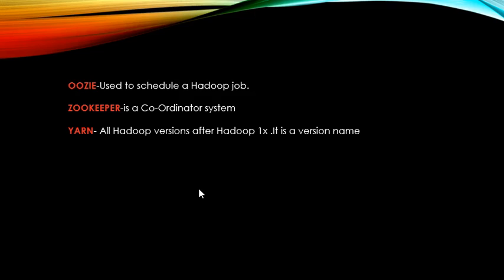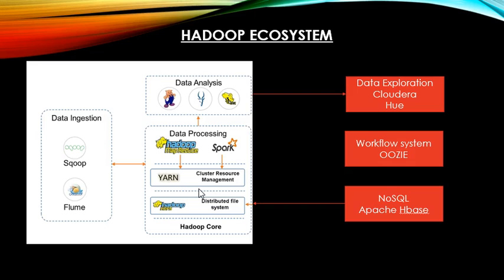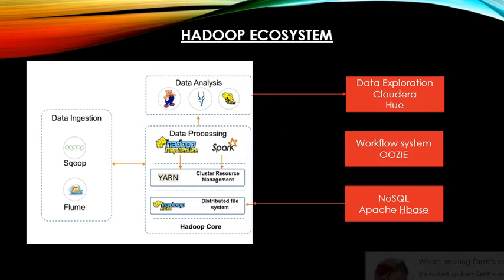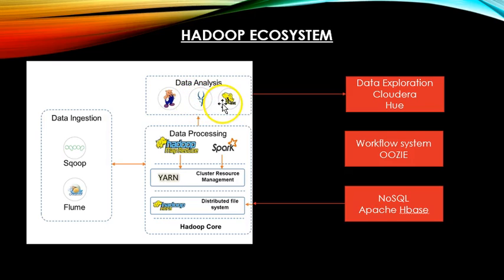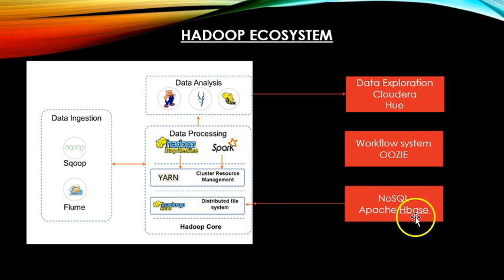Oozie is a technology used to schedule Hadoop jobs. Zookeeper is a coordinator system. YARN is a Hadoop version after Hadoop 1.x — any version above Hadoop 1.x is considered YARN. Looking at the full Hadoop ecosystem: Hadoop core includes HDFS and YARN. For data processing we have Hadoop MapReduce and Spark. For data analysis we have Impala, Hive, and Pig. For data ingestion we have Sqoop and Flume. For data exploration we have Cloudera and Hue. For workflow systems we have Oozie. For NoSQL databases we have Apache HBase.